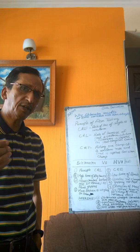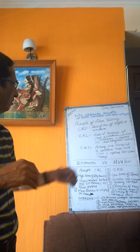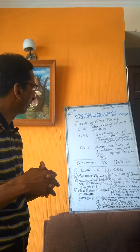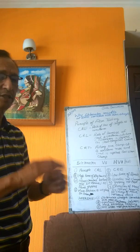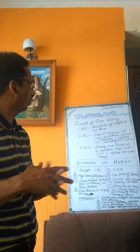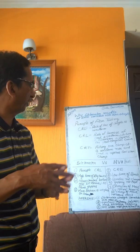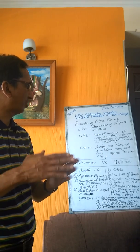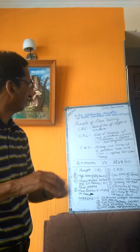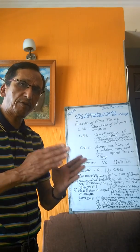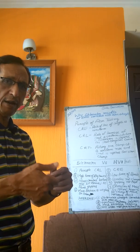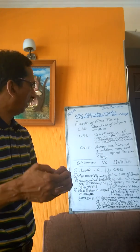Testing equipment like Pressley, Stelometer, and HVI are based on certain principles. The first is Constant Rate of Extension (CRE), where the rate of increase of length is uniform with time. The second is Constant Rate of Loading (CRL), where the rate of increase of load is uniform with time and extension depends on the load-elongation curve. The third is Constant Rate of Traverse (CRT), where load is applied through one clamp pulling at a uniform rate.